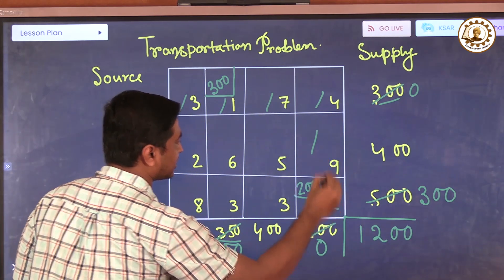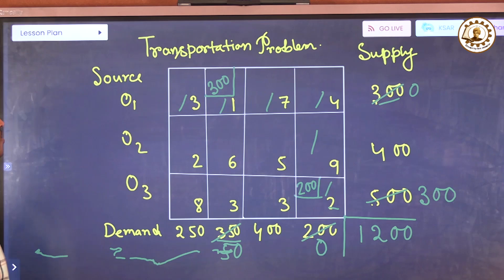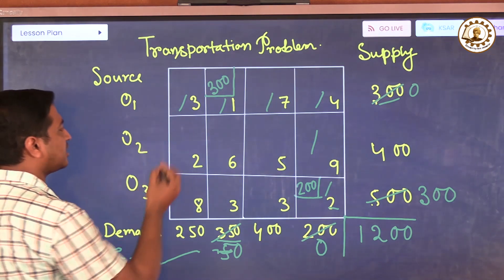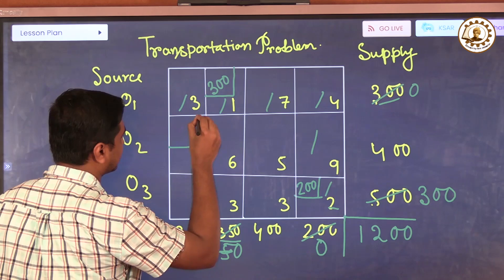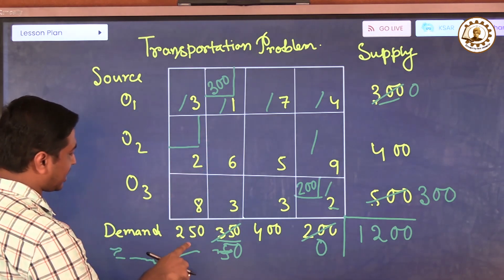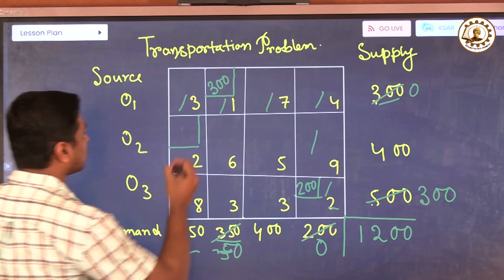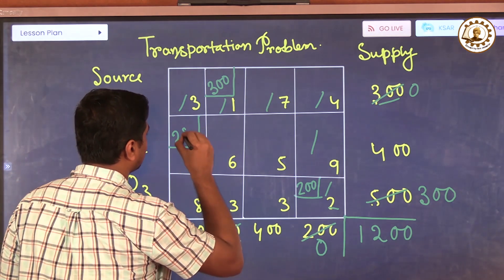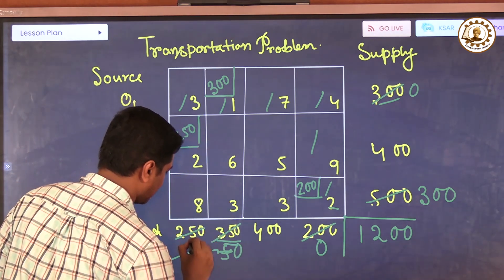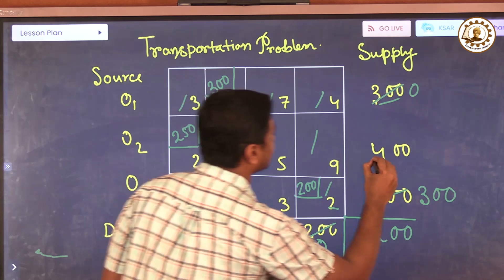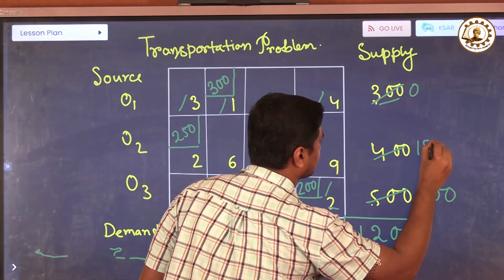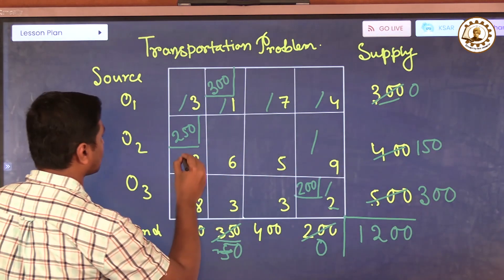This is the deleted cell. Next, minimum value is again two. Now block this cell and we can see that this is 250 and this is 400. We can put 250. This is zero and remaining is 150. Now cross this cell.